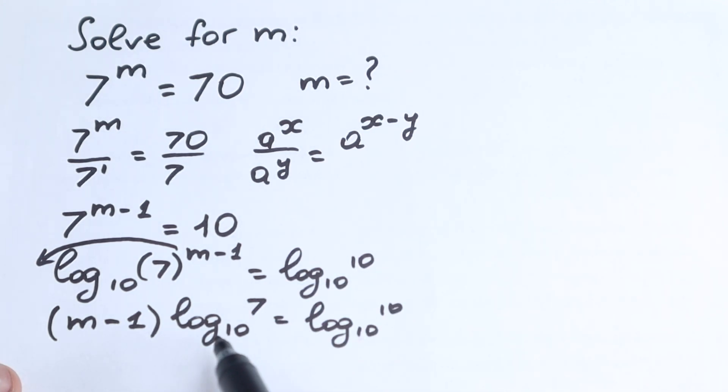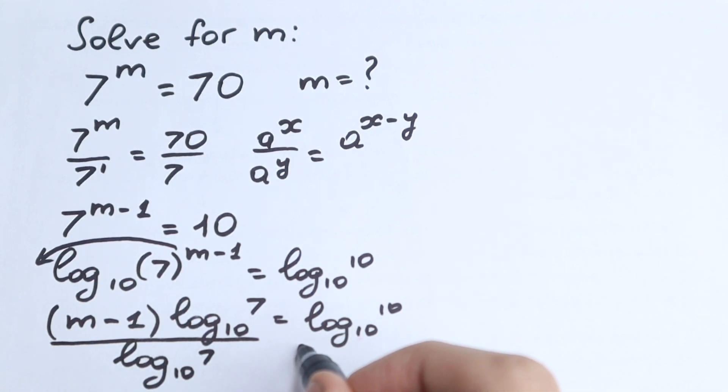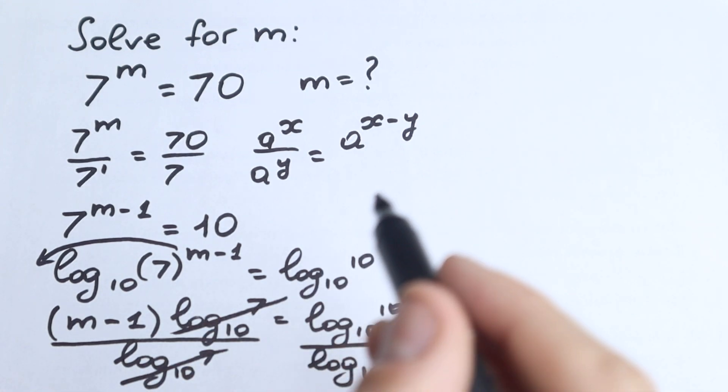Let's divide both sides by log₁₀(7). So we divide both the numerator and denominator by log₁₀(7). We can easily cancel this on the left side. We don't need it right here. We cancel this because we divide both sides by it.